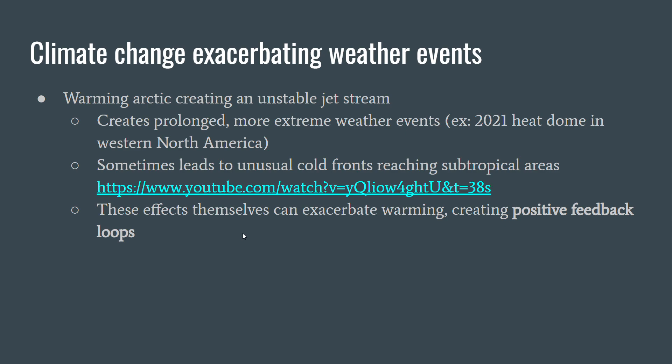Now, how climate change exacerbates weather events: the warming Arctic creates an unstable jet stream, which leads to prolonged, more extreme weather events. For example, a huge heat dome over western North America in 2021 shattered heat records, and it sometimes leads to unusual cold fronts reaching subtropical areas. These effects can exacerbate warming, creating a positive feedback loop that makes things worse in the long run.